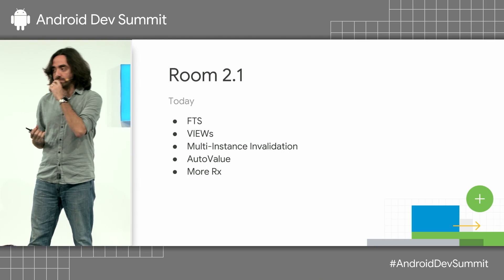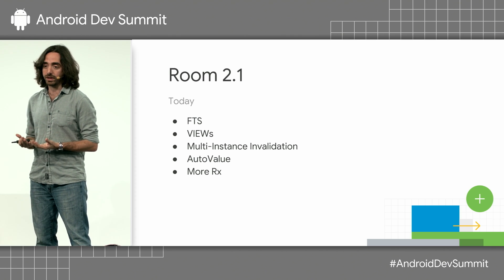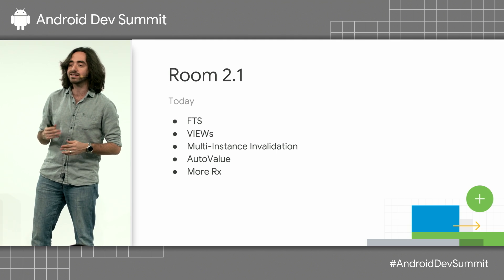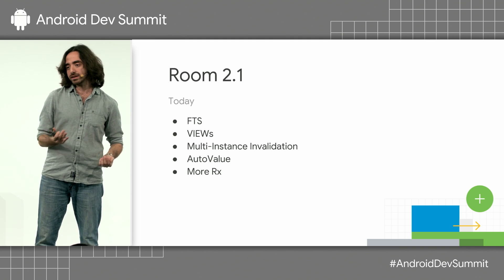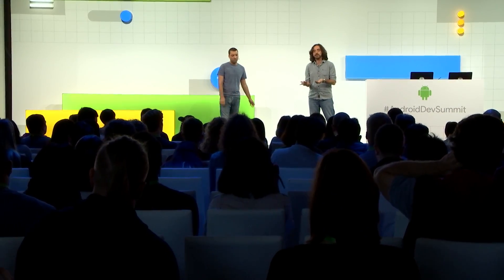Room 2.1 is a really big release — full-text search, database views, multi-instance invalidation, auto-value, and more Rx. When we decide which features to work on, we rely on your feedback. These are literally community-requested features — I personally objected to allowing Completable in insert queries for a long time, and I gave up because people really wanted it. Our development philosophy is to look at what the community is doing, how they're using it, what they want, and implement it. Please try to use 2.1, it's a very big release, and we need your feedback to ship it as stable. We look at the number of apps shipping with Room, how they're using it, incoming bugs and user errors, and try to fix them and ship.